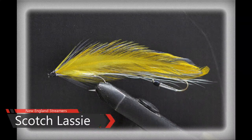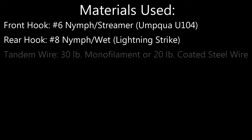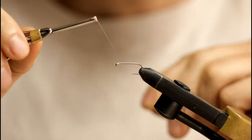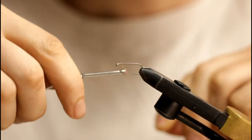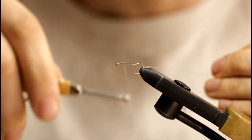Welcome to New England Streamers. Today I am going to be tying the Scotch Lassie. This fly originated in New Brunswick, Canada on the Canes River as a salmon fly, but today we're going to be tying the tandem variation that's popular here in Maine.